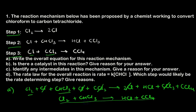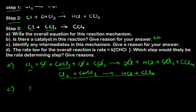Part B asks whether a catalyst is involved. A catalyst is always written above the reaction arrow. Since nothing is written on any of the arrows, there is no catalyst in this reaction. Part C asks to identify the intermediates. Intermediates are the species that cancel out when forming the overall reaction — in this case, 2Cl and CCl₃ are the intermediates.